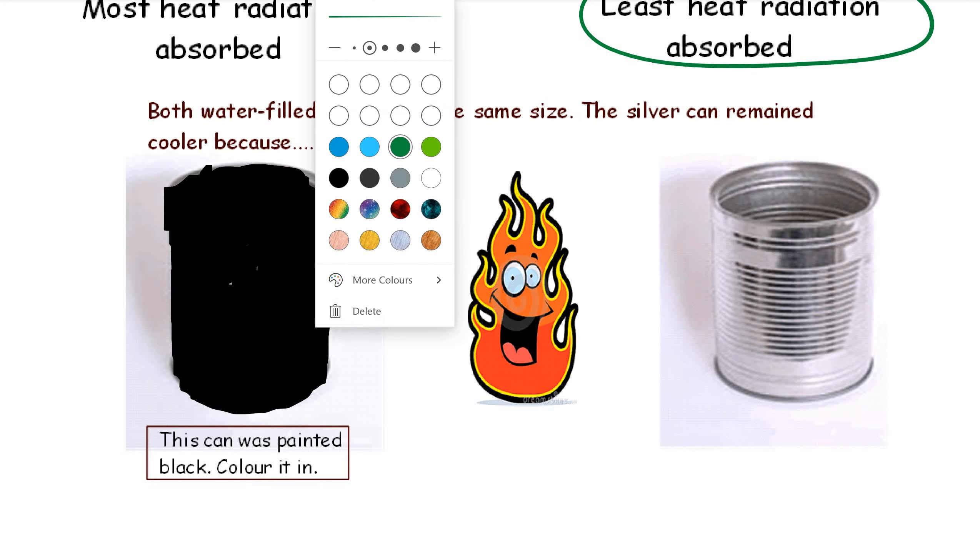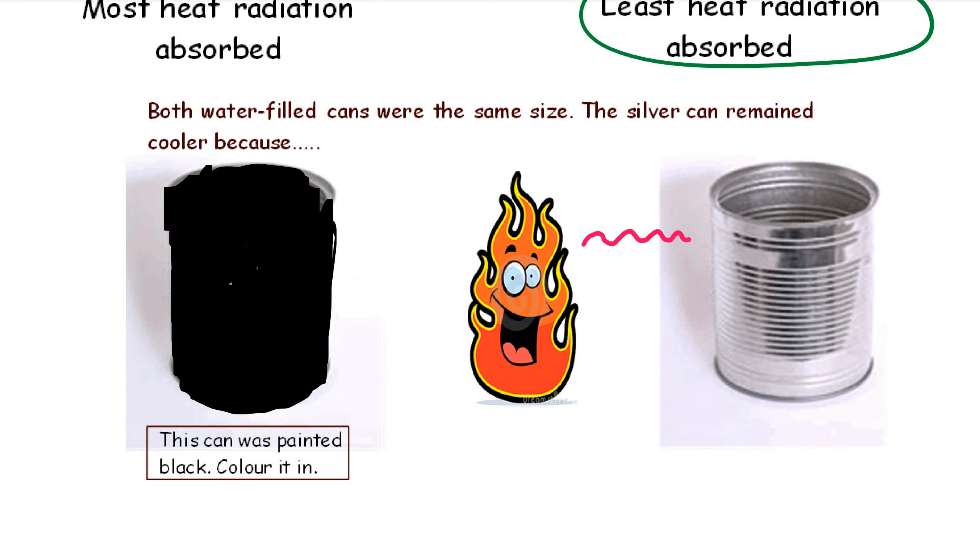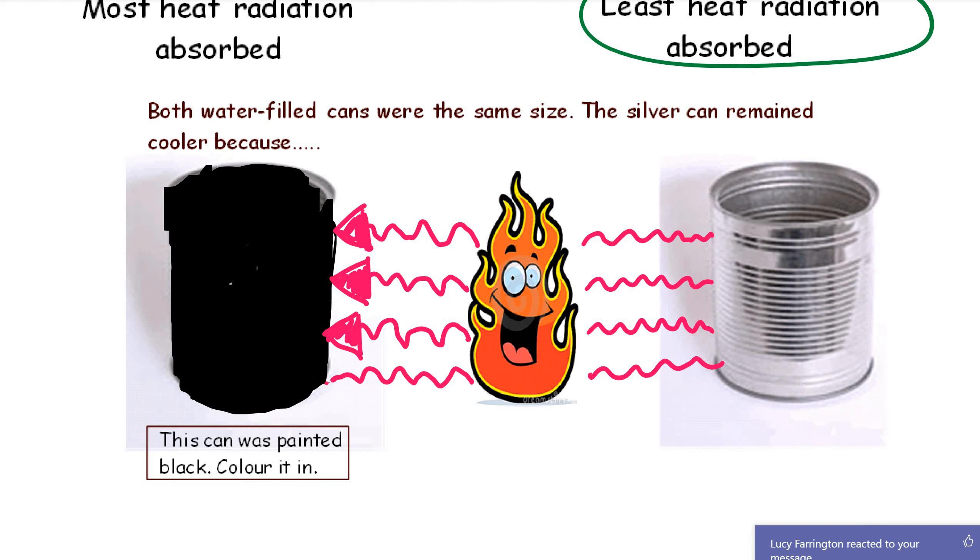The infrared heat waves, I'm doing a nice pink color, so the heat source emits same number of heat waves in both directions, but it's what happens to those heat waves that is important to understand. Now most of the infrared heat waves, the arrow heads show the direction that they're traveling in, just about all of the infrared heat waves are going to be absorbed by the black can. Some of them, some of the heat waves will be absorbed by the silver can.